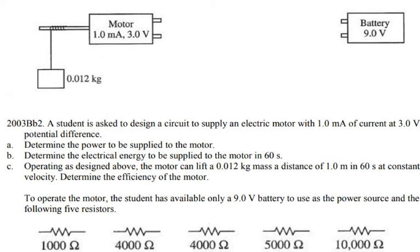This is 2003 AP Physics B exam, FRQ exam question, and now these sections are covered in AP Physics 2. The problem states that a student is asked to design a circuit to supply an electric motor with 1 milliamp of current at 3 volt potential difference.